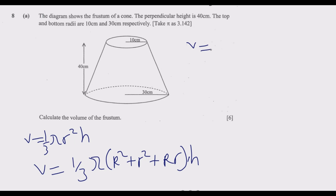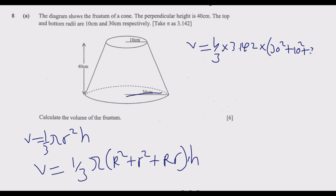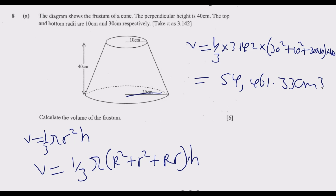Using the direct formula: V = one-third × 3.142 × (30² + 10² + 30×10) × 40. Once you use your calculator and simplify, the answer you get is 54,461.33 cubic centimetres. You can get that answer quickly if you remember the formula. Now if you can't remember the formula, you can still get the question correct.